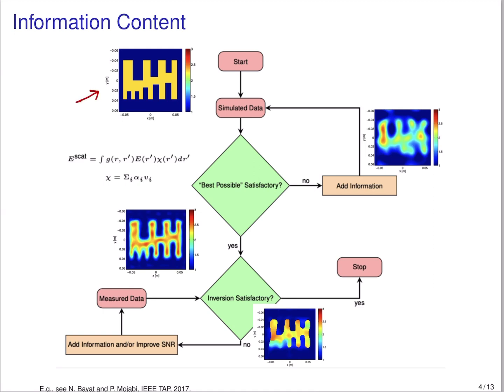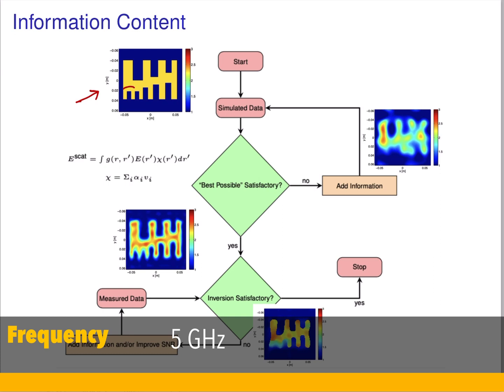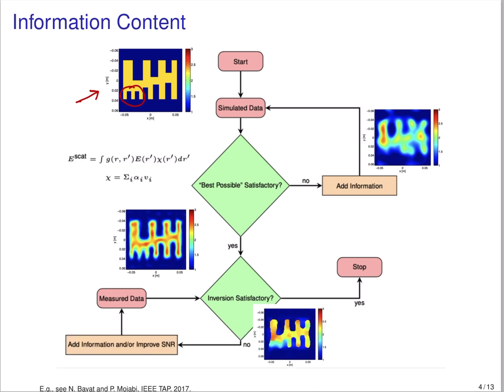Consider this simulated known target, which we assume is similar to the actual target we want to image. The details of interest would be three small fingers. If we have this simulated target, we can find the induced electric field in the object exactly. We know the Green's function exactly, so we can linearize this integral equation based on chi exactly, and then find the right singular vectors associated with this linearized integral equation, and expand our target based on those right singular vectors. Using eight transmit-receive antennas based on a line source assumption, we don't have the three fingers that we were interested in, so we understand that we are lacking information.